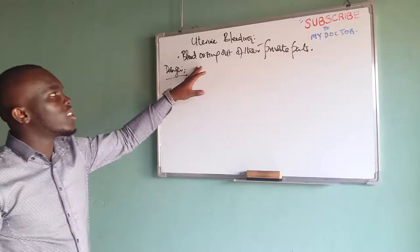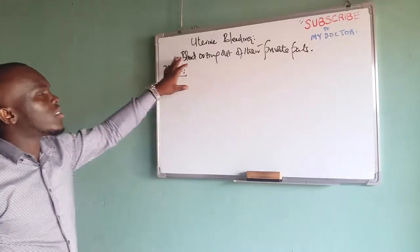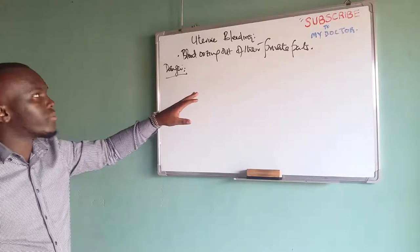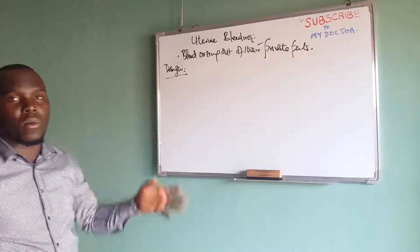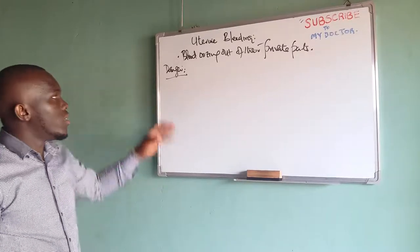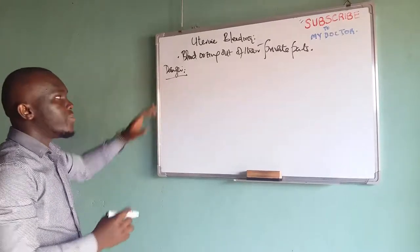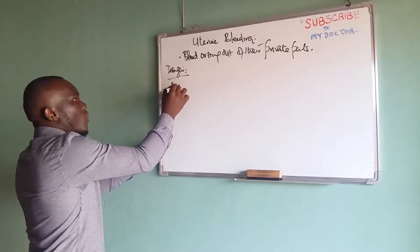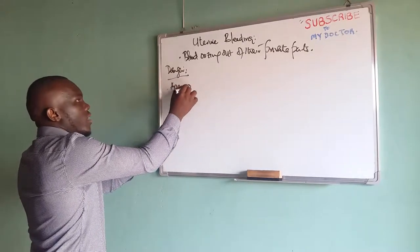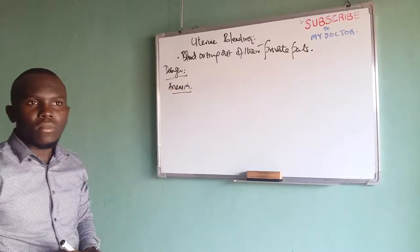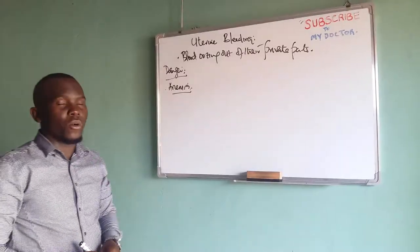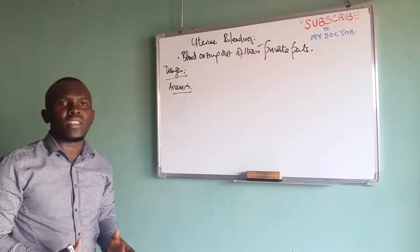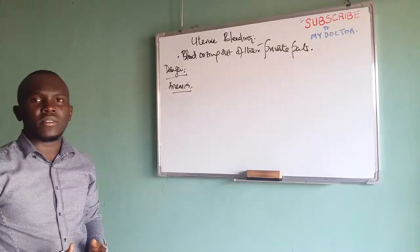In most of the cases, when you see this — be it heavy, be it lighter — it's abnormal. You're bound to lose a lot of blood, so you could develop what is called anemia. Therefore, we need to know what causes uterine bleeding so we can avoid it, or if it occurs, how can we go about it?